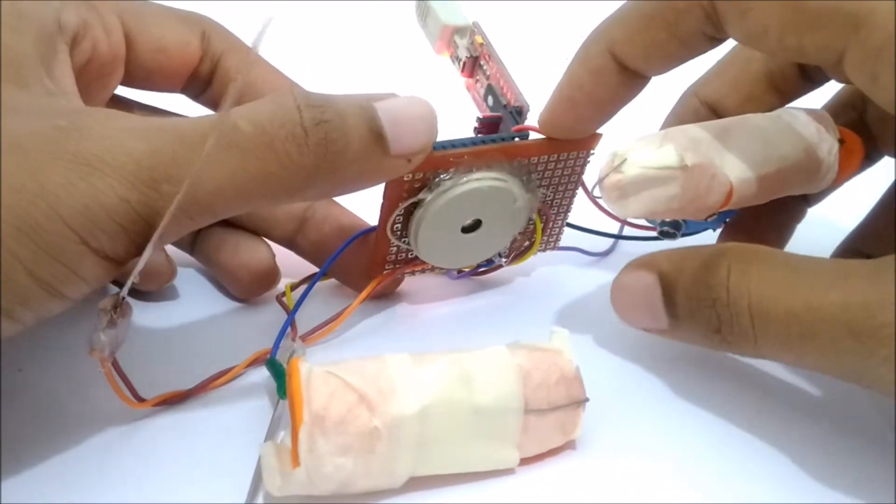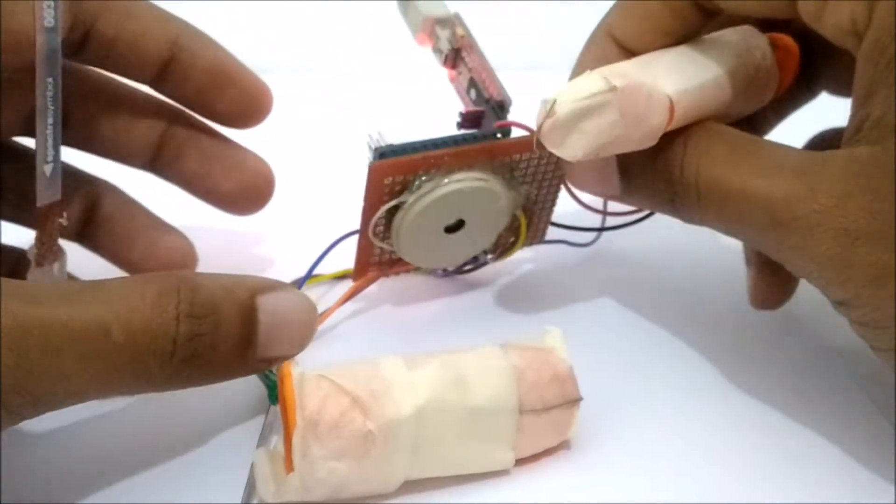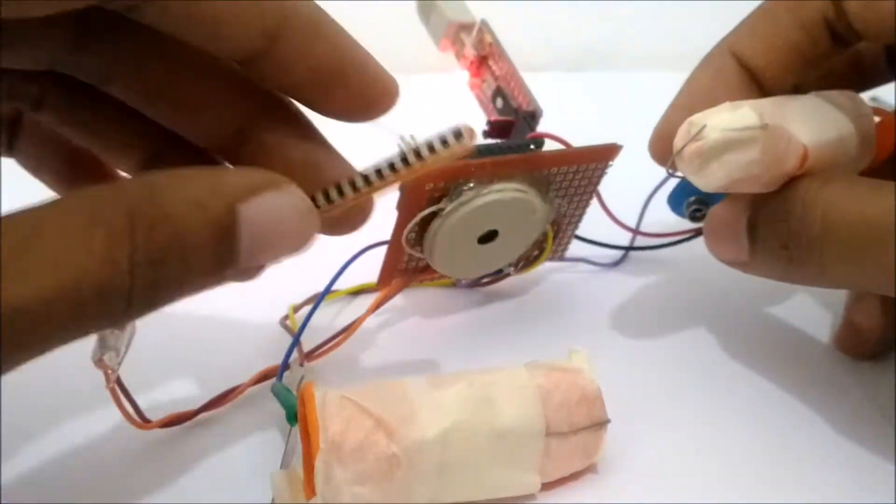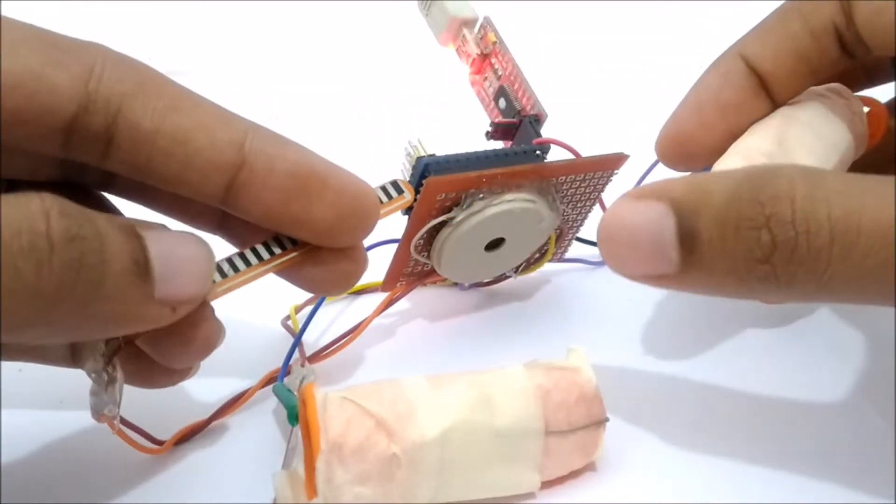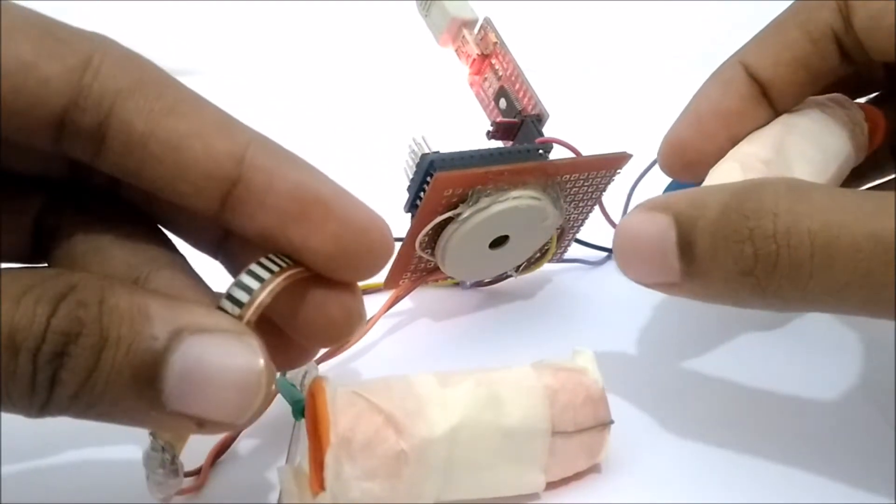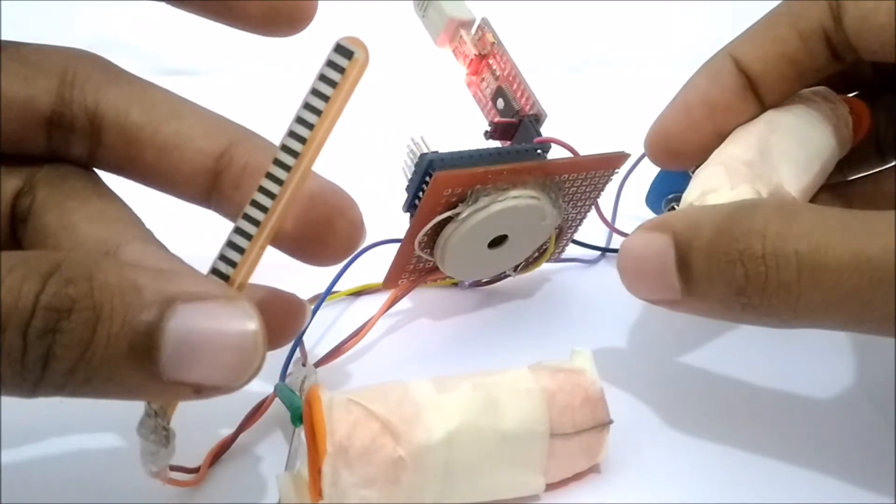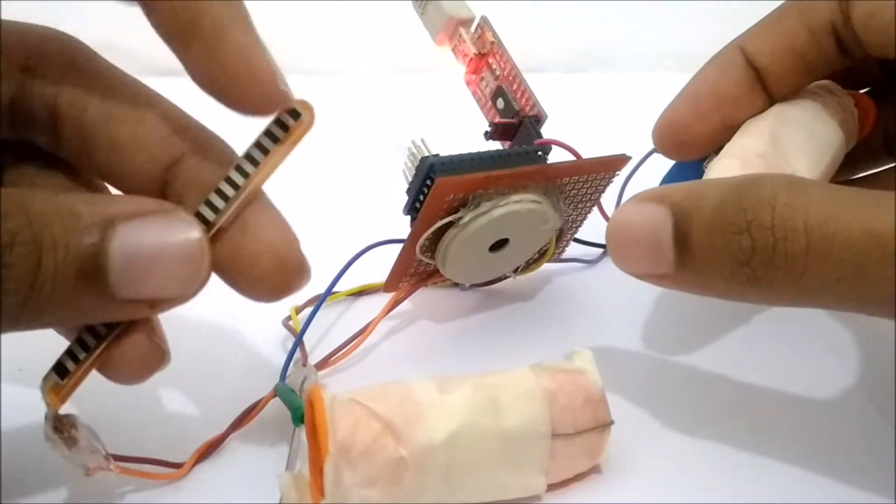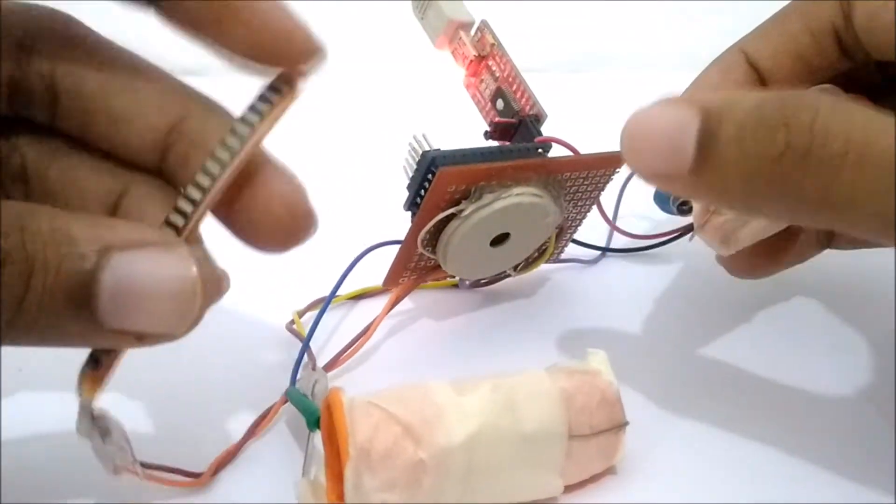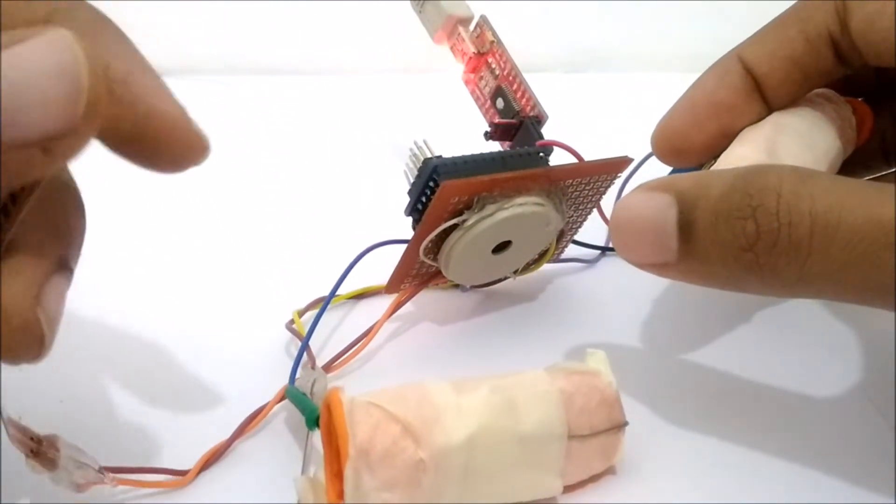You can also see that both these play a different tone. You can also set other tones based upon this flex sensor. So whenever I bend it, you can see the sound is getting changed. See, whenever I bend it, the sound will also get varied.